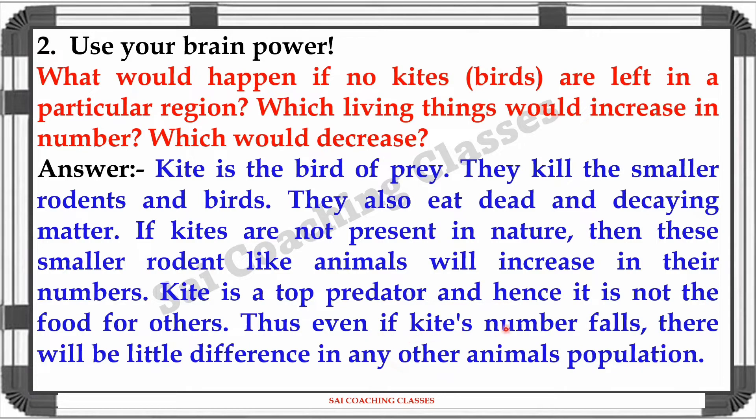Kite is a top predator and hence it is not food for other animals. Thus, even if the kite's number falls, there will be little difference in any other animal population.